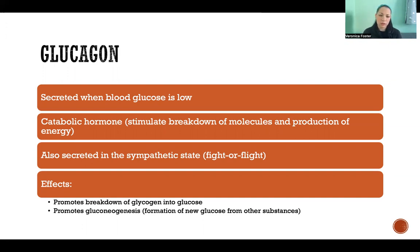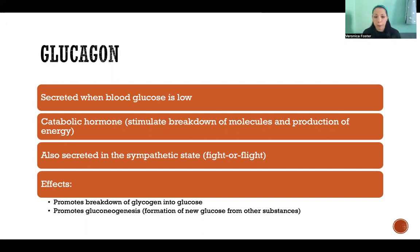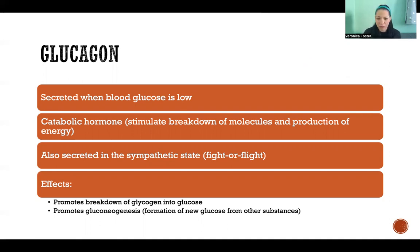Another time when glucagon is secreted is when we are in fight or flight. During a sympathetic state, we secrete glucagon because the goal is to mobilize all of our available resources to supply our bodies with the energy we need to get through that situation — whether we have to fight a bear or run away. Having more sugar available to fuel that activity is going to be really useful.